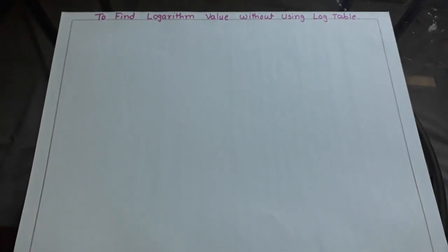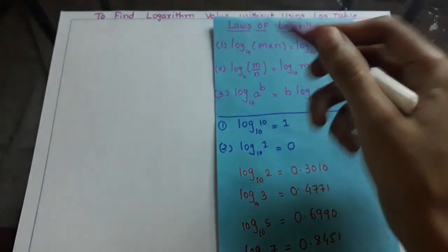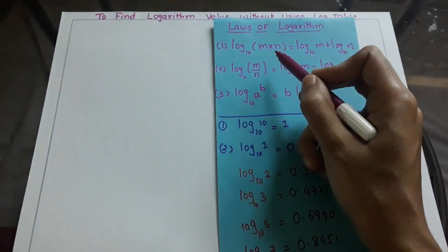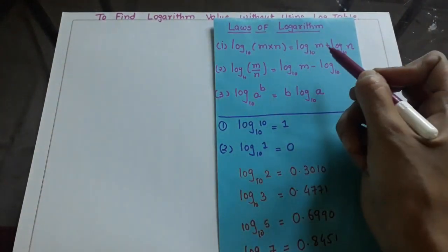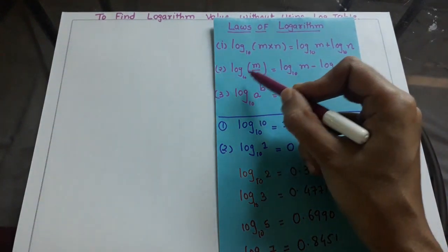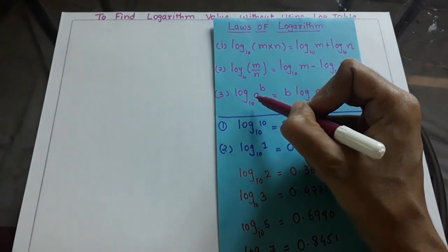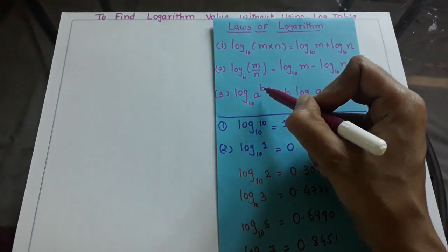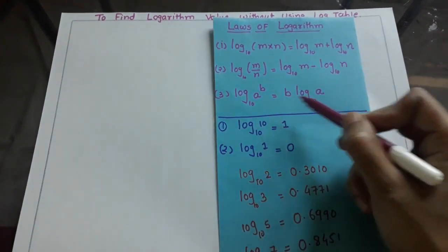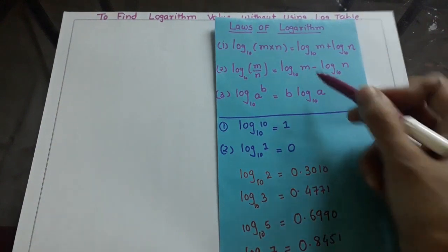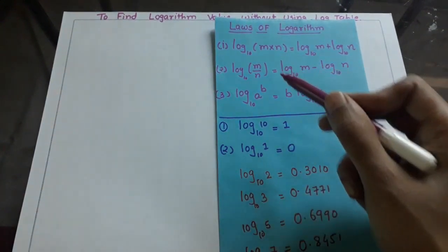Hi students, today I have brought an excellent trick to find the value of log without a log table. For that, we need to learn some laws of logarithm. The first law is log(m × n) = log m + log n. The second is log(m/n) = log m − log n. The next one is log(a^b) = b·log a.